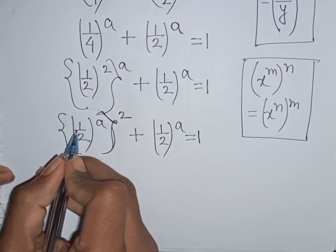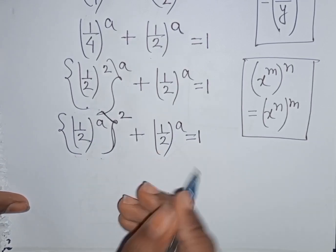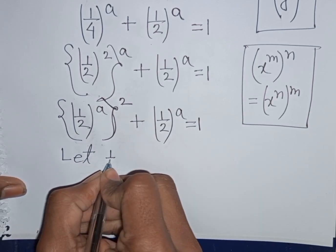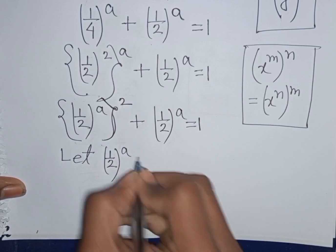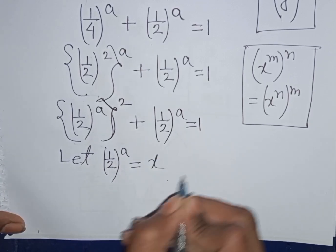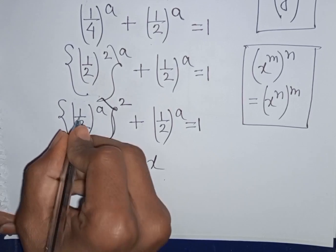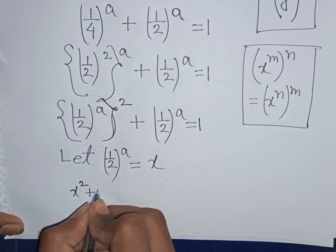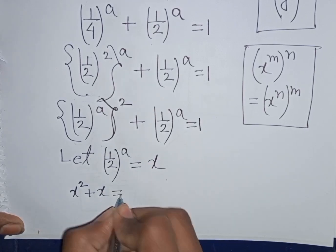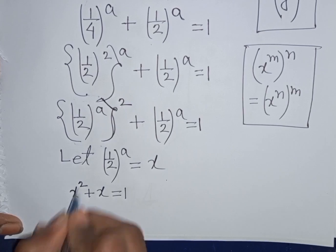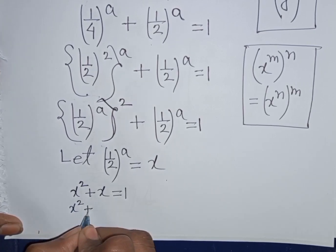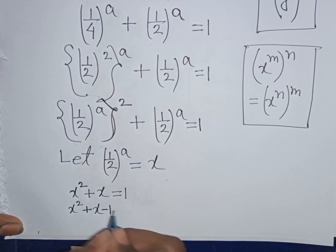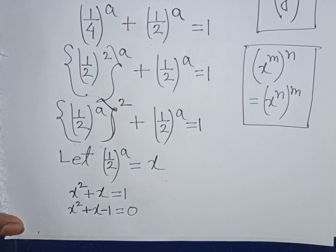We see that (1/2) power a appears in both terms. Let x equal (1/2) power a. Then we can write x squared plus x equals 1. Moving 1 to the left side, this becomes x squared plus x minus 1 equals 0.